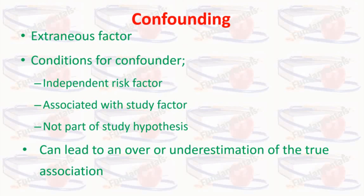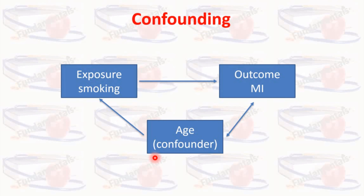The conditions for a confounder are: first, it is independently associated with the outcome; second, it is associated with the study factor, that is, the exposure; and third, it is not part of the study hypothesis — that is, it is not in the causal pathway. A confounder can lead to an over- or underestimation of the true association. For example, in a study to determine the association between smoking and myocardial infarction, age can be a confounder as it is associated with both exposure and outcome independently.